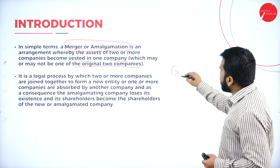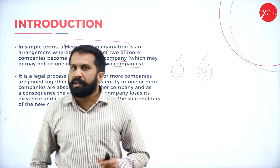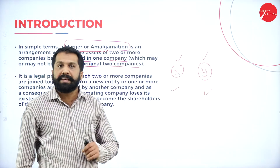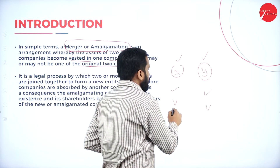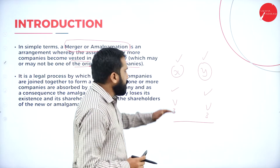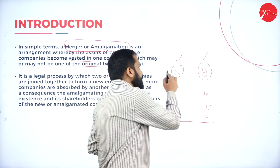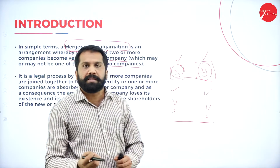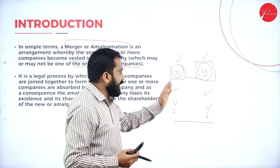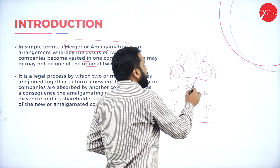Just assume there is a jewelry shop X and also a jewelry shop Y. Both are in the same area — say, Vijayanagar, third stage, on the same road. Normally, half the customers go to X, half go to Y, and some go elsewhere because both are small shops. A few customers prefer big shops. So what did they decide? We will merge. We will amalgamate and start a new jewelry shop called XY Jewelry Shop.